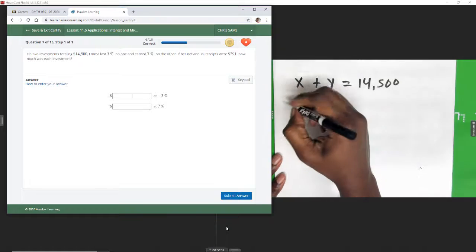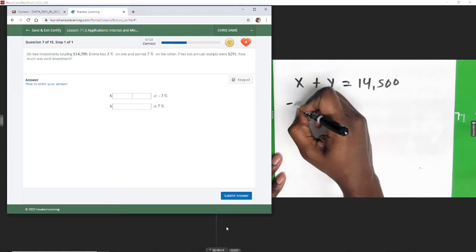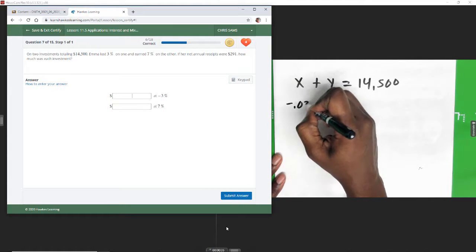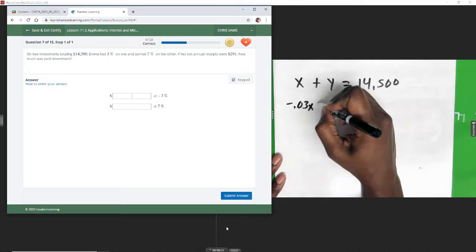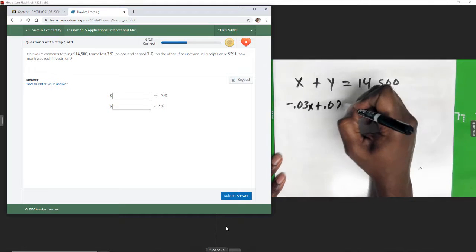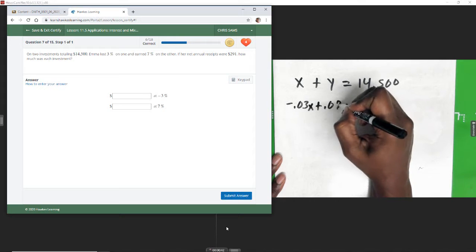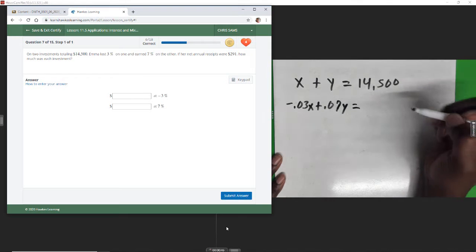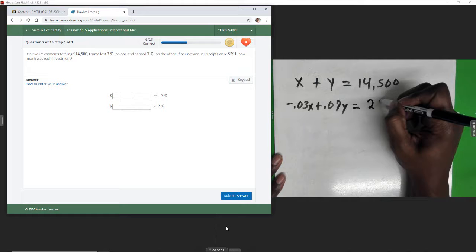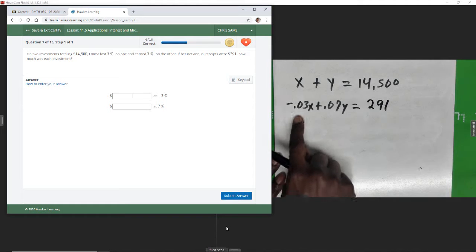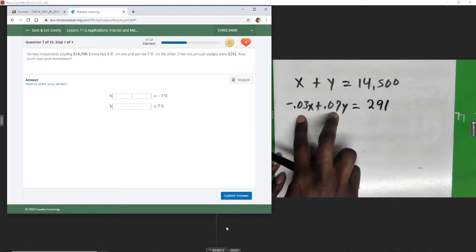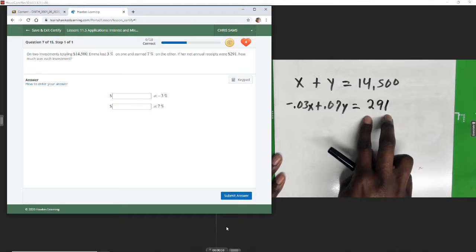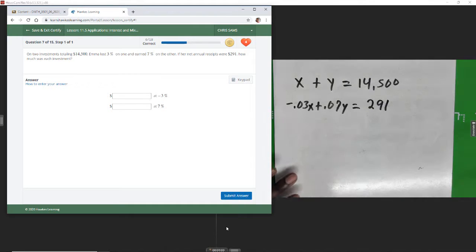So I'm going to say negative 0.03x plus 0.07y, changing those percentages to decimals, equals her net annual receipt, which was $291. So I take my loss with my gain and I got a total net of $291. I want to know how much was invested at each amount.